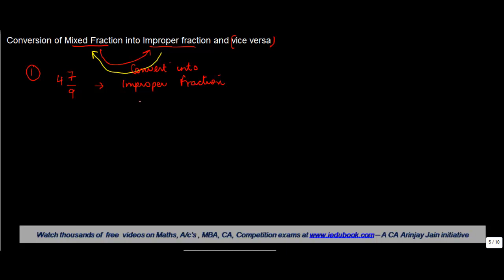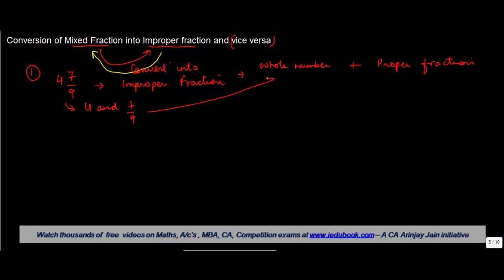If you remember, a mixed fraction is a combination of a whole number plus a proper fraction. So by 4 and 7/9, what I mean is: I read this as '4 and 7 by 9,' which is nothing but 4 as the whole number, so I write it as 4 plus 7 upon 9.